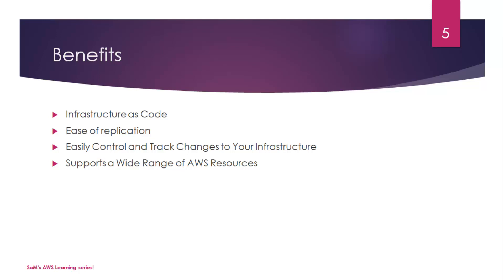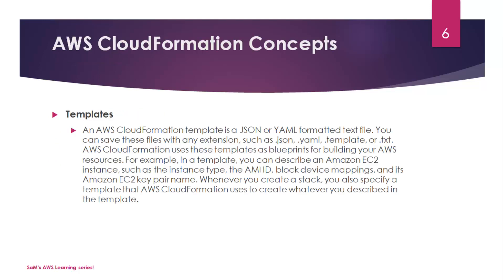CloudFormation supports a wide range of AWS resources. Let's talk about some of the key concepts involved in CloudFormation. First: template. An AWS CloudFormation template is a JSON or YAML formatted text file. You can save these files with extensions such as .json, .yaml, .template, or .txt. AWS CloudFormation uses these templates as blueprints for building your AWS resources. For example, in a template you can describe an Amazon EC2 instance — specifying the instance type, AMI ID, block device mapping, and its Amazon EC2 key pair name — giving you complete control over that resource.